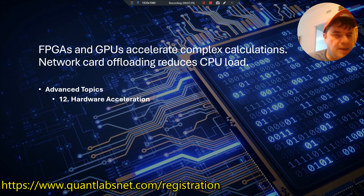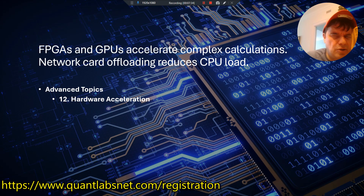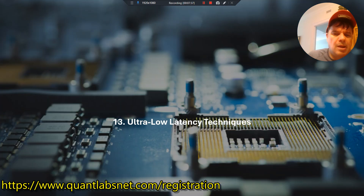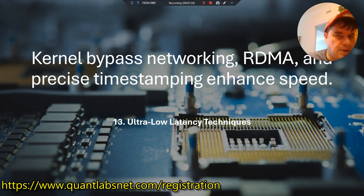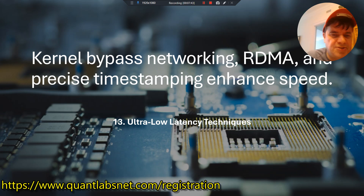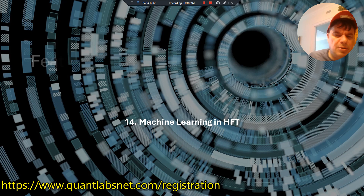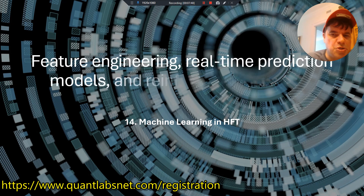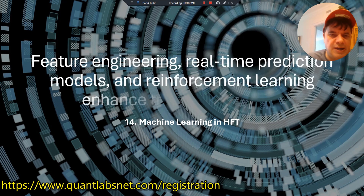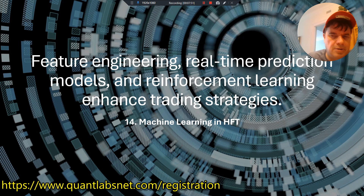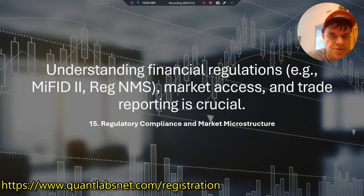Hardware acceleration: FPGAs and GPUs accelerate complex calculations. Network card offloading reduces CPU load. Ultra-low latency techniques include kernel bypass networking, RDMA, and precise time stamping to enhance speed. Machine learning in HFT covers feature engineering, real-time prediction models, and reinforcement learning to enhance trading strategies.